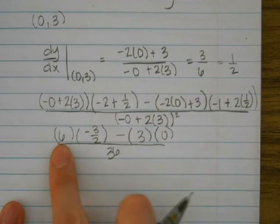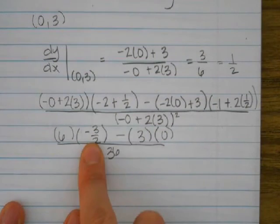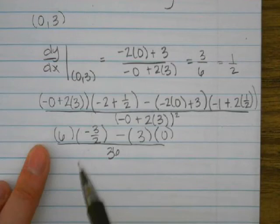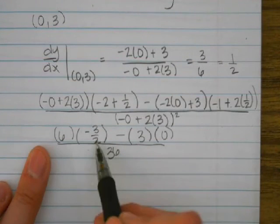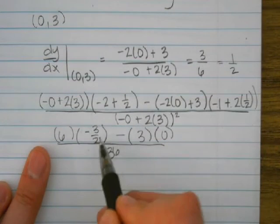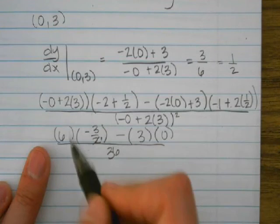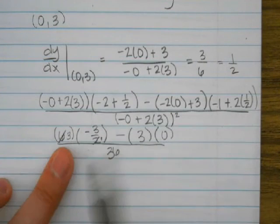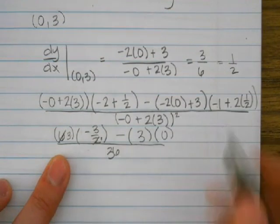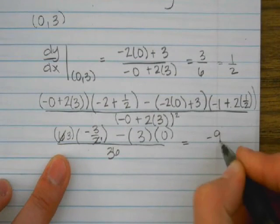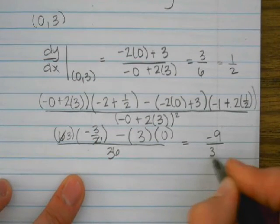So 6 multiplied by negative 1.5, I'm going to say that 6 divided by 2 is 3, so 2 goes into 2 once, 2 goes into 6 3 times. So 3 times negative 3 is negative 9 on the top.